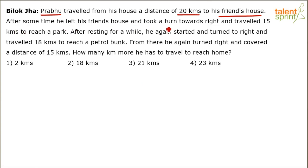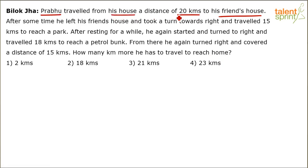He left his friend's house and took a turn towards right and traveled 15 kilometers to reach a park. After resting for a while in that park, he started again and turned to right and traveled 18 kilometers to reach a petrol bunk. Then from there again he turned right and covered a distance of 15 kilometers. The only thing missing is in which direction did he move from his house — in which direction was the 20 kilometers covered to reach his friend's house? Let's try it out.